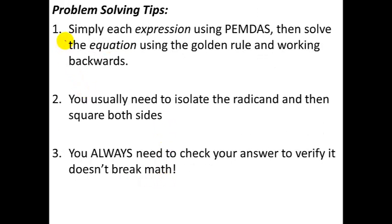A couple of problem-solving tips and we'll get right to the examples. First, you want to simplify each expression — the expression on the left and the expression on the right. Simplify each side first following PEMDAS forwards, and then solve the equation, which means working on both sides simultaneously by following the golden rule: whatever you do on the left, you also do on the right, as well as working backwards through PEMDAS. So, first add and subtract to both sides, then multiply and divide on both sides, then take care of exponents — and squaring or square rooting is this exponent section. Only after you've added, subtracted, multiplied, and divided will you be dealing with these square root symbols.